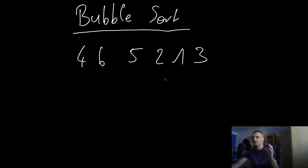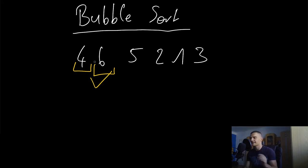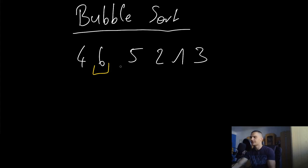The bubble sort algorithm takes the first number and compares it to its neighboring number. Four and six are in the right position — four is less than six, so we accept that. Then we take six and compare it to five. Six is larger than five but comes before it, so that's not okay and we swap those two numbers.